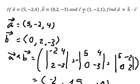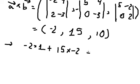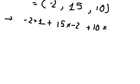The next one we have the dot product with vector C. So we have negative 2 multiplied by 1, then 15 multiplied by negative 2, and the last one 10 multiplied by 1. We calculate these numbers and we have negative 22. This is the end — thank you for watching.